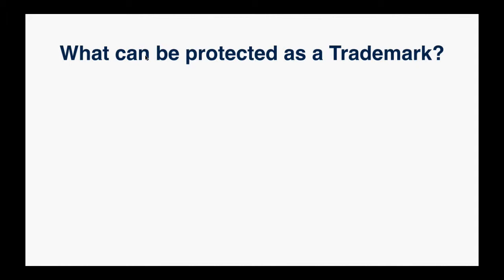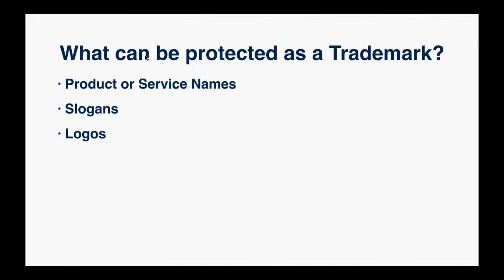So what can be protected as a trademark? Clearly product and service names, but everything has to be associated with an actual product or service — you can't do a blanket company name. So Procter & Gamble doesn't have protection for just the name Procter & Gamble; it has to be associated with particular goods and services like detergents or baby diapers. You can also do slogans, logos, shapes, colors, sounds, and flavors.